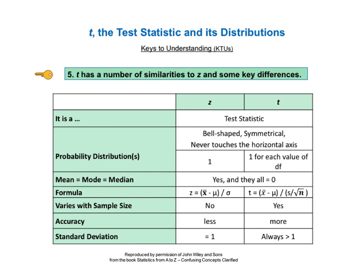The first difference is that z has one distribution, the standard normal distribution, while t has a different distribution for each value of degrees of freedom. Now we are familiar with thinking of degrees of freedom as being n minus 1, but t has different formulas for degrees of freedom for each of the three different types of t-tests.